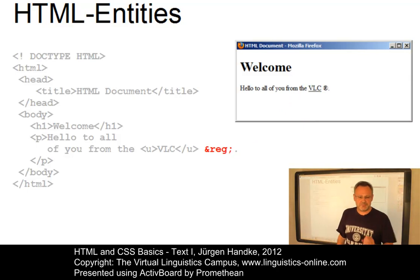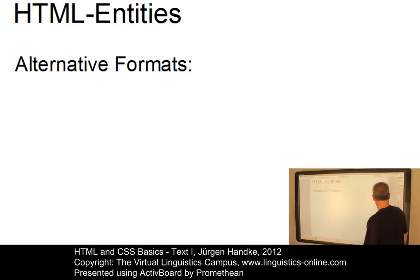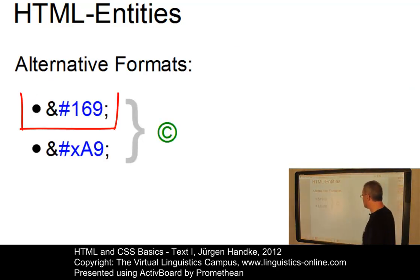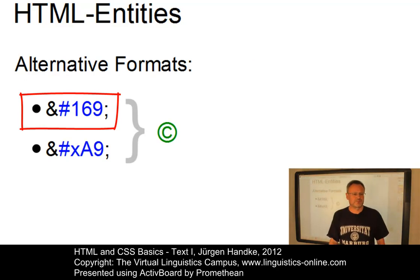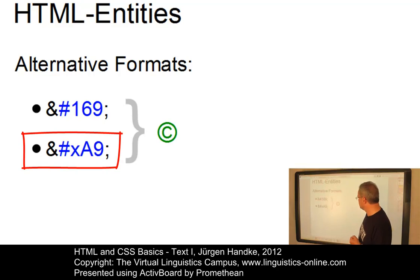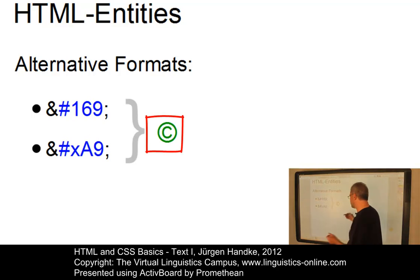Beyond these name-based entities, one can use numeric references and other alternatives. So, the first one are numeric references in the decimal format. And the second is the so-called hexadecimal code, with which entities can also be displayed. In both cases, we have alternative representations for the copyright symbol once more.